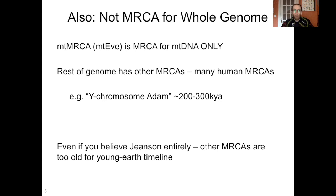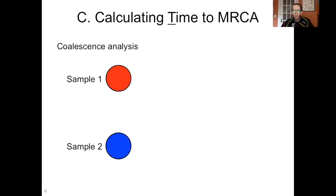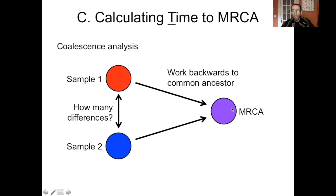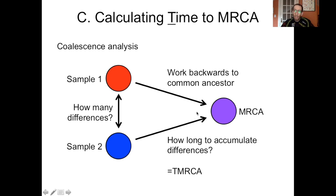So how do we calculate the time to a most recent common ancestor? We do a thing called coalescence analysis. Basically, we take two samples, sequence whatever DNA we want from them, and tally up the differences — how many differences are there between those two samples? We work backwards in time until they converge at a common ancestor, and that's our MRCA. The question is: given the number of differences it would take to get from that most recent common ancestor to each of our samples, how long would it take to accumulate those differences? That time is called the time to most recent common ancestor, or TMRCA, and that's what we're calculating for Mitochondrial Eve.